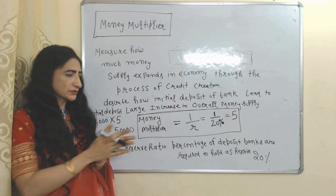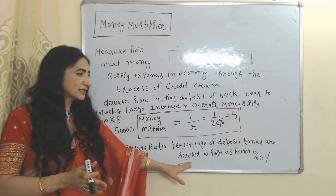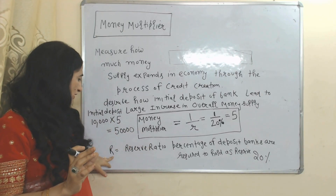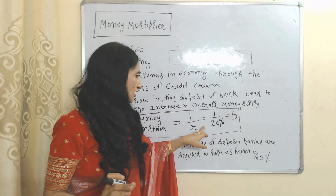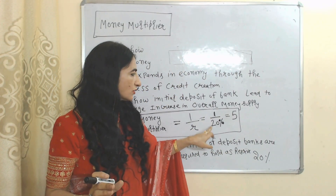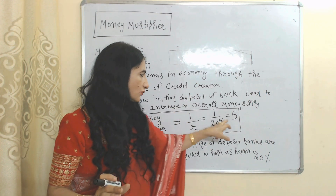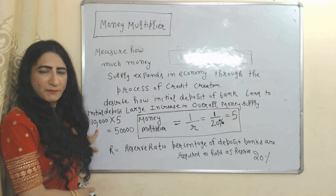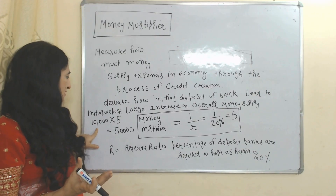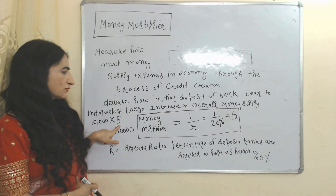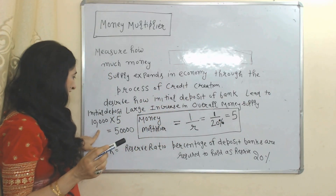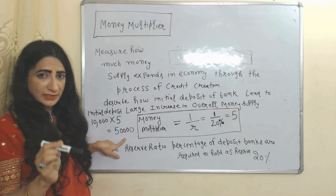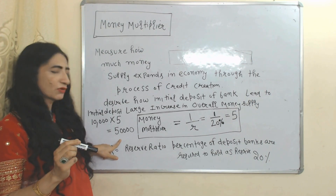The formula of the money multiplier is 1/r, where r is the reserve ratio — the percentage of deposits banks are required to hold as reserve and cannot use for credit purposes. If r equals 20%, then money multiplier = 1/0.20 = 5. If the initial high-powered money is 10,000, then 10,000 × 5 = 50,000. Through credit creation, the bank can expand money supply to 50,000.